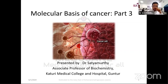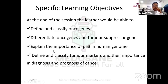Welcome. In this session we'll define and classify oncogenes, differentiate oncogenes from tumor suppressor genes, discuss the importance of p53 as the guardian of the human genome, and define and classify tumor markers along with their importance in diagnosis and prognosis of cancer. This session will be a bit longer than the previous two sessions.